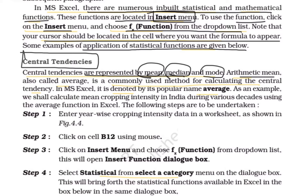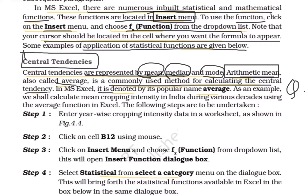Arithmetic mean is also called average. There are various types of mean — arithmetic mean, harmonic mean, geometric mean — but arithmetic mean is generally what we refer to as average in day-to-day life. It is the most commonly used method for calculating central tendency. In MS Excel, it is denoted by its popular name 'average'.